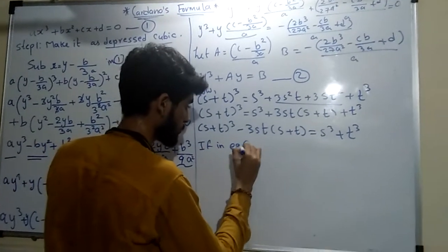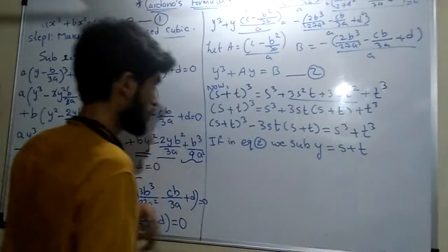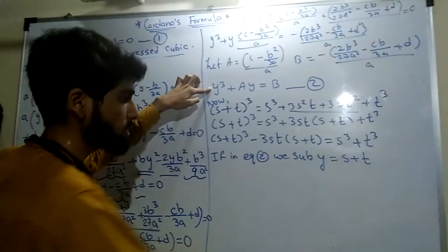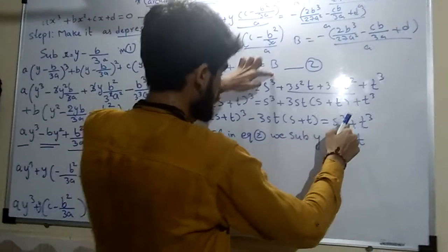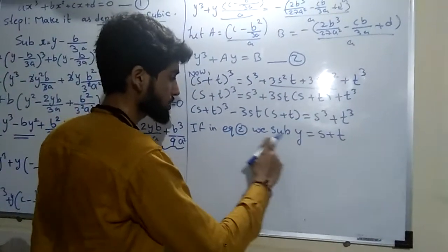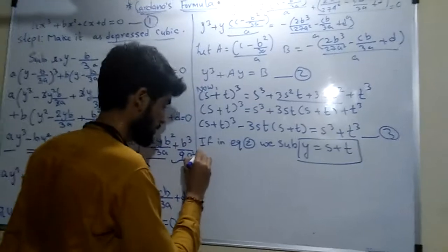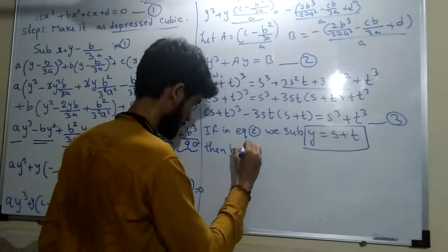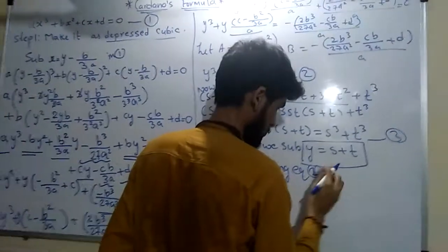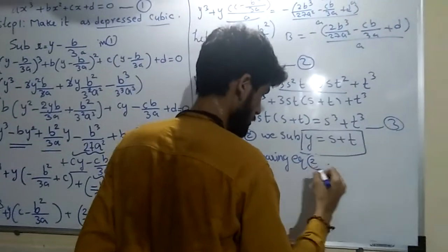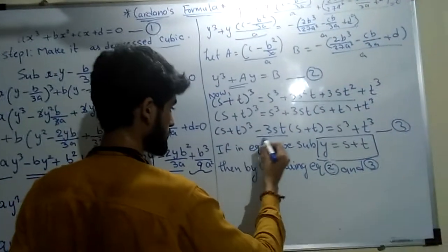In equation number 2, we substitute y equals s plus t. After substituting, we observe that it is (s+t)³ plus a times (s+t) equals b. If I substitute equation number 1 — y equals s plus t — I can compare with equation number 2. By comparing, we observe the structure of the terms on both sides.